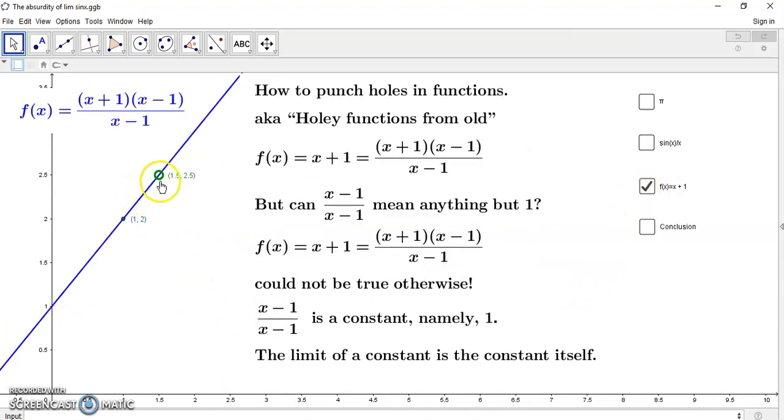Let's look at one more example. Now, so mainstream baboons love to punch holey functions, and they need to be able to do this. Otherwise, their entire epsilon-delta arguments go out the window. I mean, they're already fake as they are, and they're already full of flaws as they are.